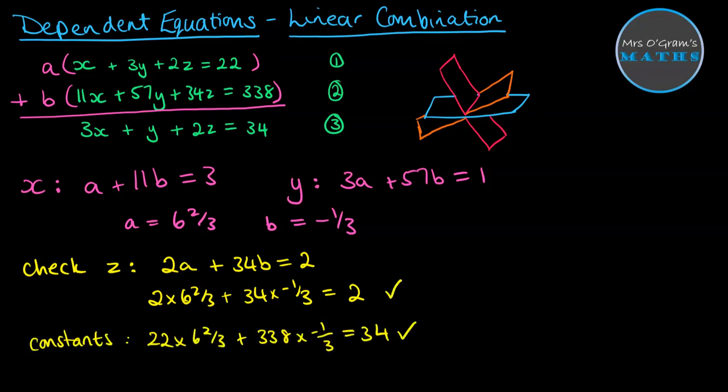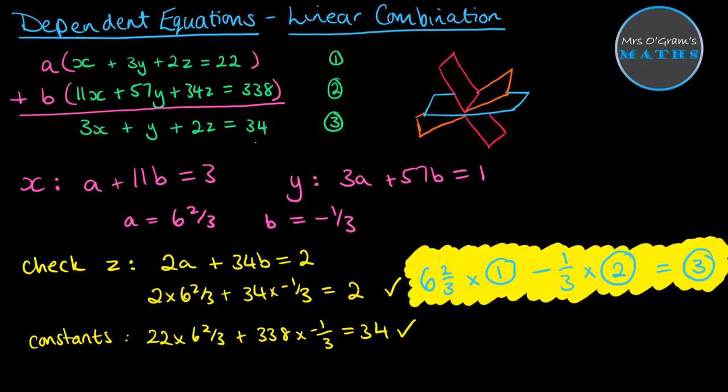You can also check these constant terms in the final column, and they also work out fine. So we found the linear combination, and it is that if we do equation number one times 6 and 2/3 minus equation number two times 1/3, we will get equation number three.